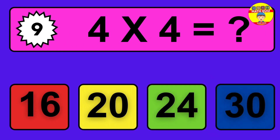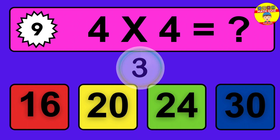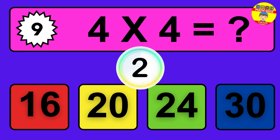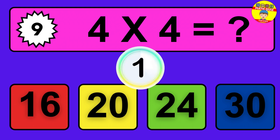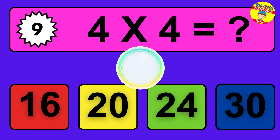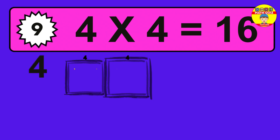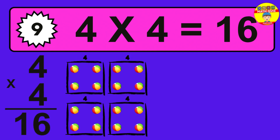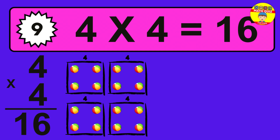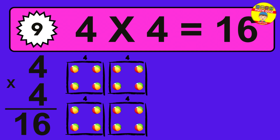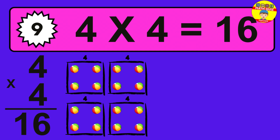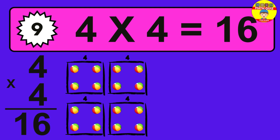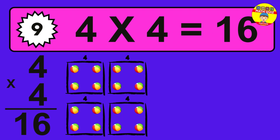Question 9. 4 times 4 equals what? The answer is 4 times 4 is 16. To calculate, we have 4 groups with 4 balls each one. So how many balls do we have? 16 balls.